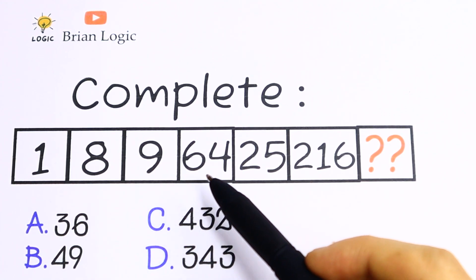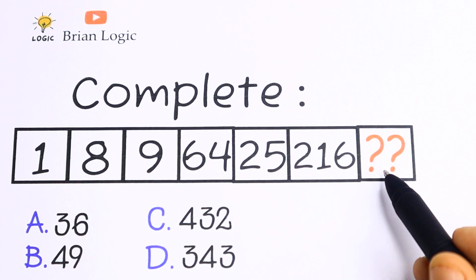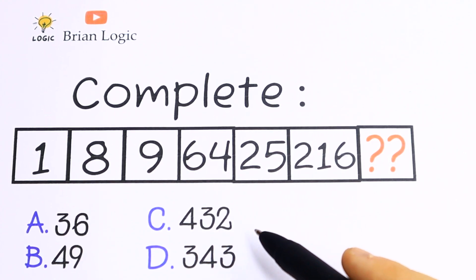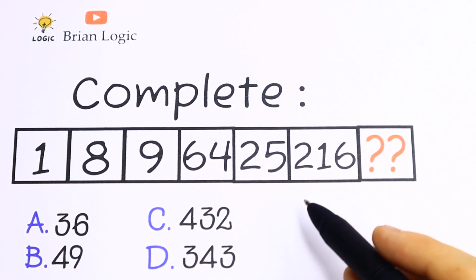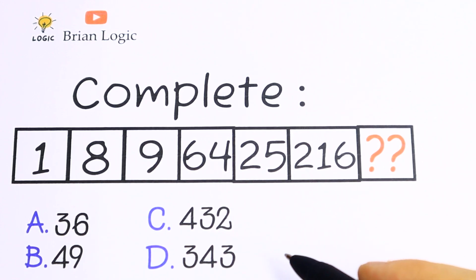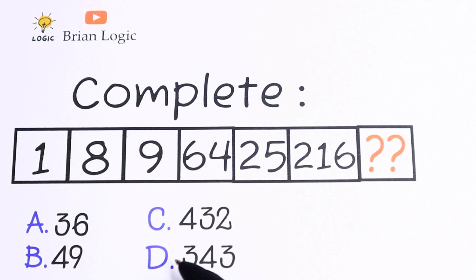We have 1, 8, 9, 64, 25, 216 and we need to find the last number. Right now pause the video and write your answer in a comment, doesn't matter about your age. After 10 seconds we will solve this interesting IQ question.